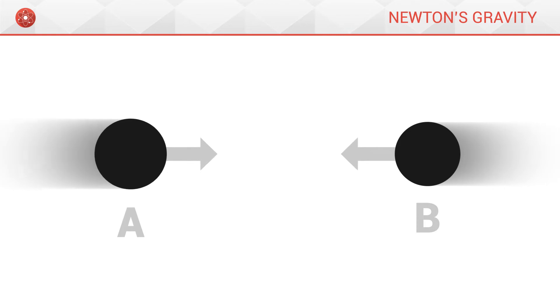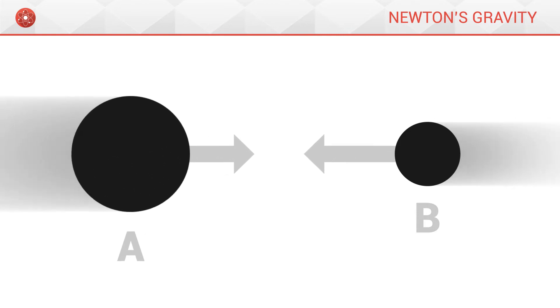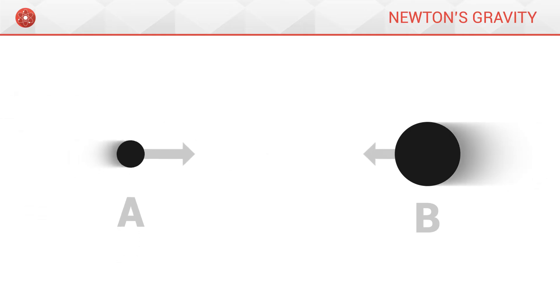If A was more massive, then the gravitational pull would be stronger. Inversely, if A was less massive, then the gravitational pull would be weaker. This is equally true for B.